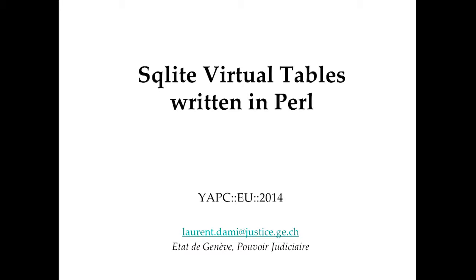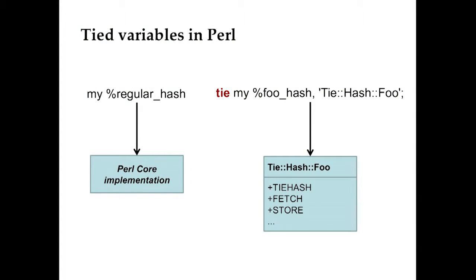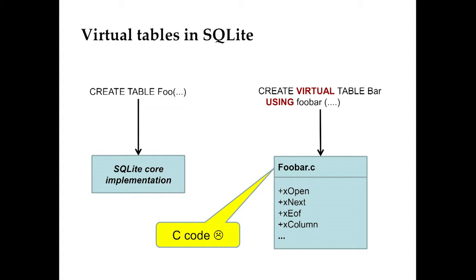There is a new thing called virtual tables. Virtual tables follow the same idea we already have in Perl with tied variables. Everybody knows we can have a regular hash or a tied hash, with the implementation being a bunch of methods in Perl. In SQLite, they have had this same notion for quite a long time — you can have a regular table or a virtual table.